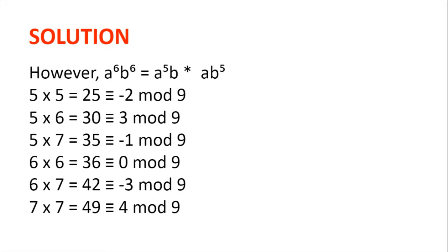However, a to the power of 6b to the power of 6 can be rewritten as a to the power of 5b multiplied by ab to the power of 5. And 5 squared is 25, which is minus 2 modulo 9; 5 times 6 is 30, which is 3 modulo 9; 5 times 7 is 35, which is minus 1 modulo 9.